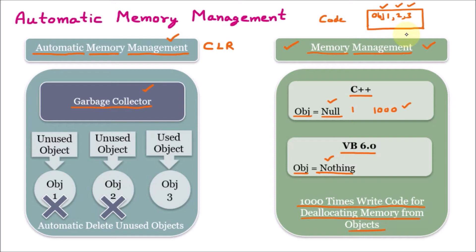We are understanding what automatic memory management is. In earlier memory management, we had to write code for deallocating memory. Now there is a component — the garbage collector — that takes care of all unused objects. Here, let's say we have unused object 1, unused object 2, and used object 3. The garbage collector automatically takes care of objects that are unused. The garbage collector scans the heap memory. We should understand that there is a memory area called the heap.